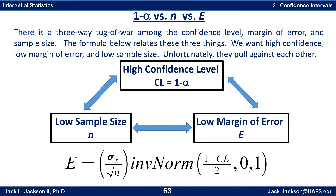We have three variables: the confidence level, the margin of error, and the sample size. We want a high level of confidence — say 95% or even higher. We'd like a small margin of error, to estimate the mean within just a few units. And we'd like a low sample size because it costs money and time to collect larger samples. Unfortunately, these things work against each other, creating a three-way tug-of-war. The formula at the bottom relates all three. Remember, sigma is assumed given, and we always use a standard normal.